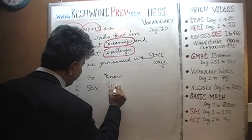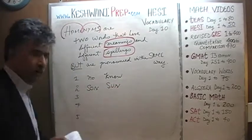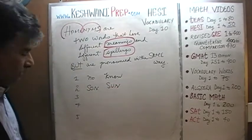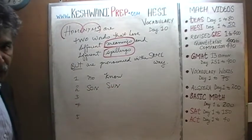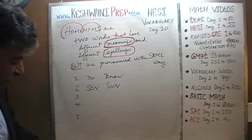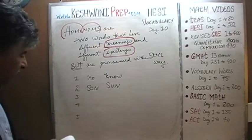'Son' and 'sun' — again, you get the idea. S-O-N, 'son'; S-U-N, 'sun.' They have different spellings, different meanings.